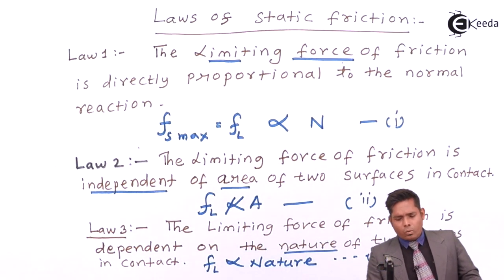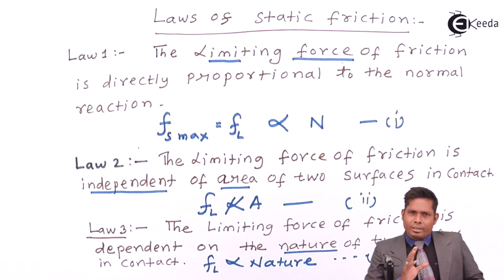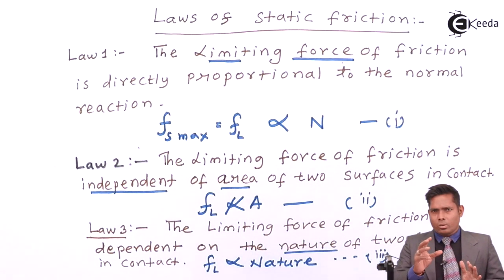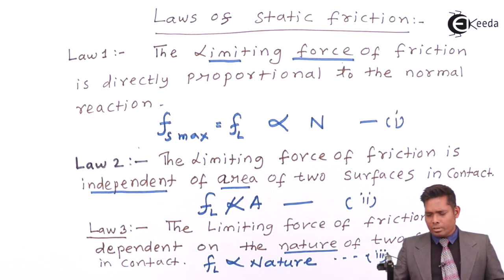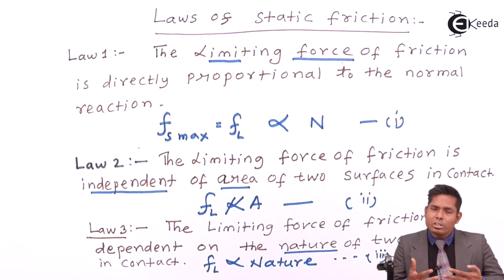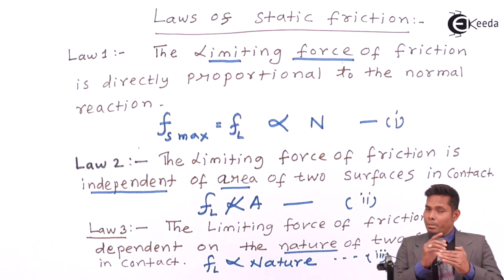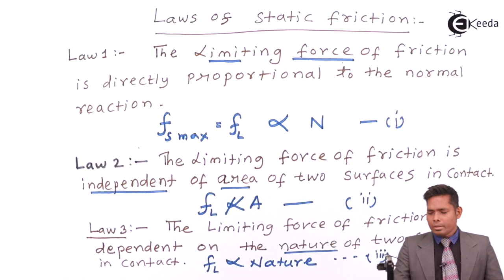So students, we have written the laws of static friction: limiting friction depends on the normal reaction, it depends on the nature of two surfaces, and it is independent of the area of contact. These are the three laws. Now we will write the laws of kinetic friction. These laws are applicable when two bodies have a tendency of relative motion but there is no actual motion. When there is no relative motion, none of these will be applicable. So whenever there is tendency but motion has not started, the laws of static friction will act.